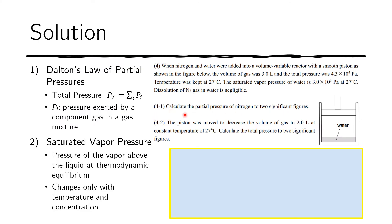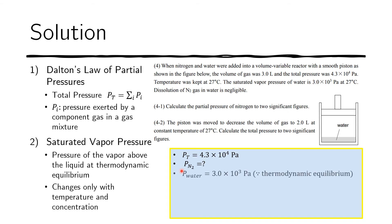Now let's do the first part — calculate the partial pressure of nitrogen. We know the total pressure from the problem is 4.3 × 10⁴ Pascals. We don't know the partial pressure due to nitrogen — that's what we're looking for. But we know the partial pressure due to water is 3.0 × 10³ Pascals, which is the saturated vapor pressure, because we assume the water is in thermodynamic equilibrium with its vapor — the amount of liquid water is neither increasing nor decreasing.